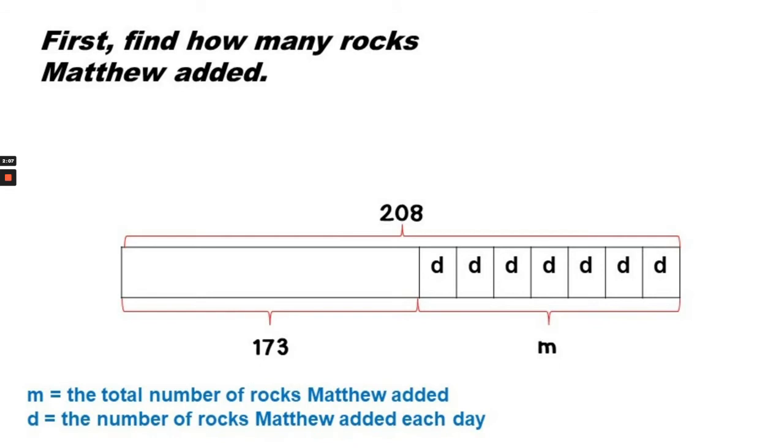How can we find out how many rocks Matthew added? We would need to know the difference between the total number of rocks that he has at the end and the number of rocks that he had to begin. So that would be 208 minus 173, which gives us the difference of 35. So M equals 35. That's the number that Matthew added.